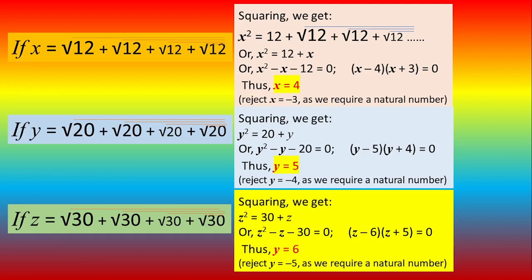On squaring what do we get? On the left hand side we have squared the first one. So x squared, one of the √12 will come out and the others will be inside, but because this is infinite the number remains the same. Don't think that out of 4, 1 has come out you will remain 3. No, this is infinite. So you get x squared equals 12 plus x, and when you factorize by breaking the middle term you get x equal to 4. The minus 3 we reject it because it is not a natural number.